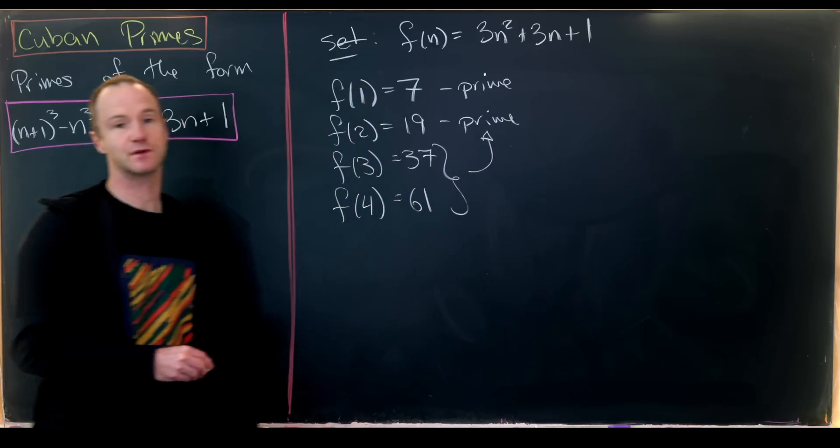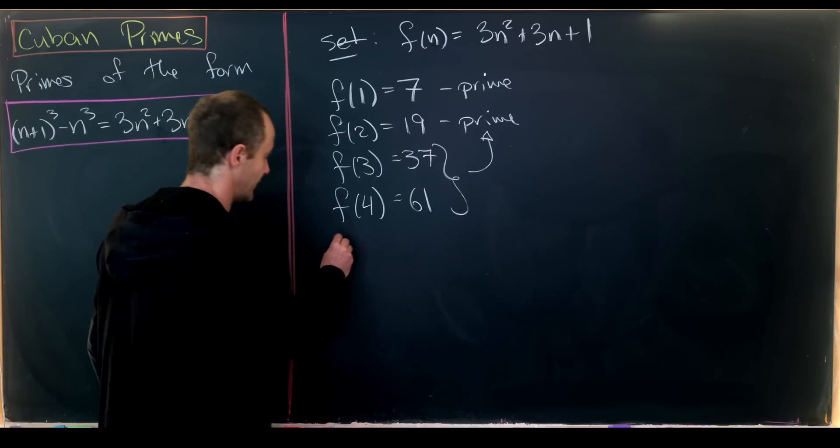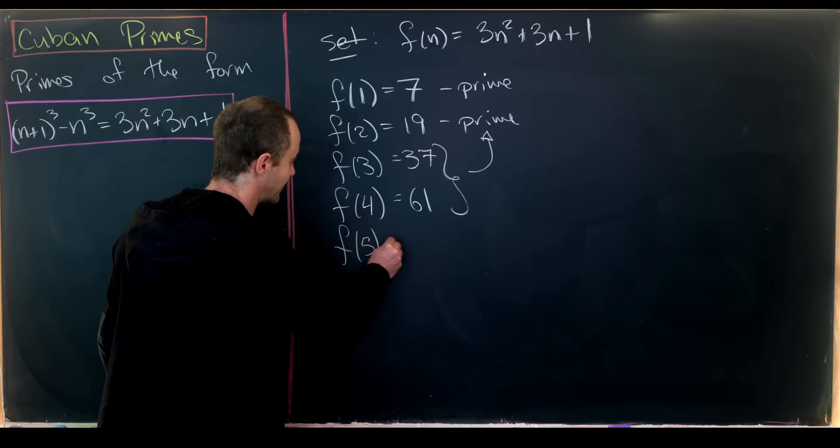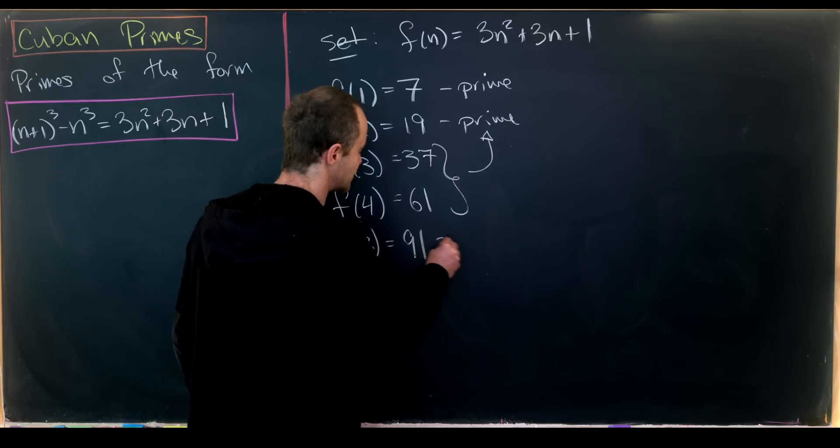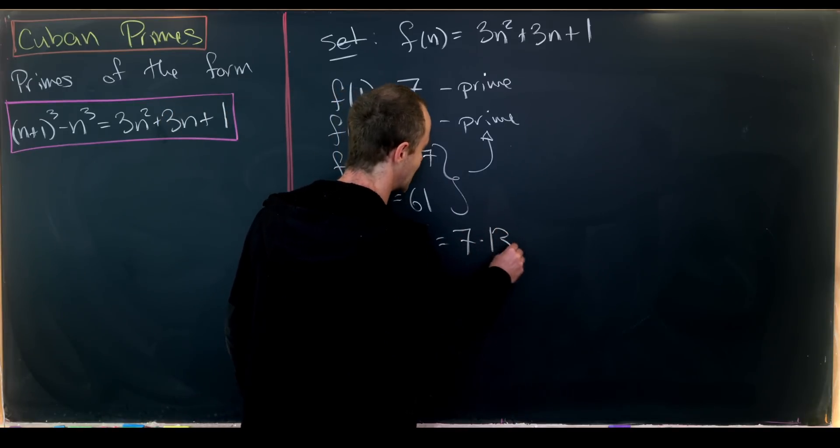But f(5) = 91, which is not prime—that's 7 × 13.